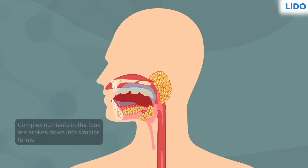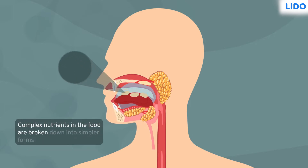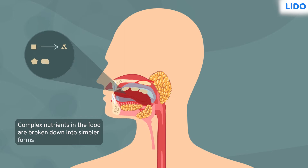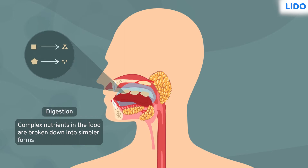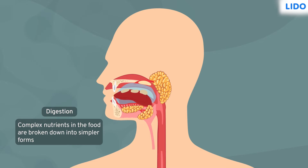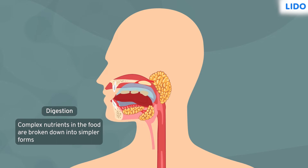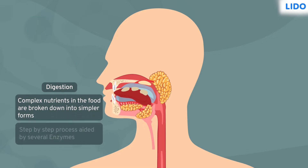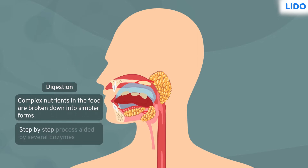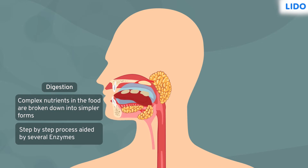This food contains complex nutrients that are broken down into simpler forms right from the mouth by a process called digestion. But the process of digestion does not happen all at once. Different components of food are broken down in parts of the digestive system and many different enzymes aid this process.